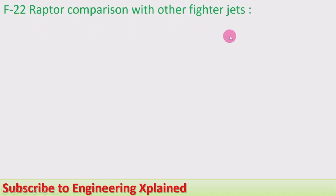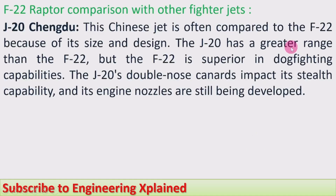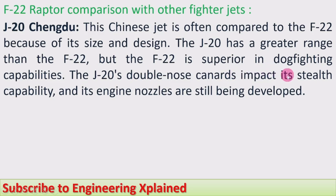F-22 Raptor comparison with other fighter jets — J-20 Chengdu: This Chinese jet is often compared to the F-22 because of its size and design. The J-20 has a greater range than the F-22, but the F-22 is superior in dogfighting capabilities. The J-20's double nose canards impact its stealth capabilities, and its engine nozzles are still being developed with some issues.